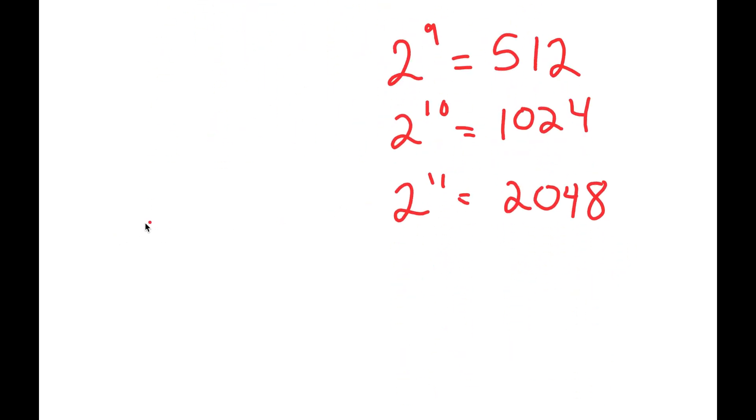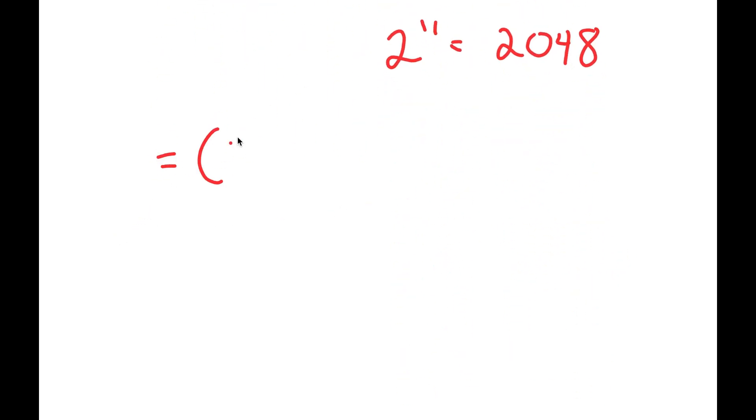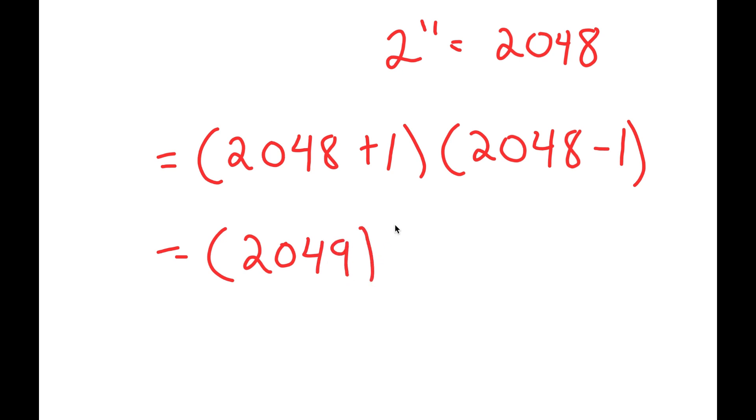So, now I get 2048 plus 1 times 2048 minus 1. 2048 plus 1 is 2049, and 2048 minus 1 is 2047. So, I get 2049 times 2047.